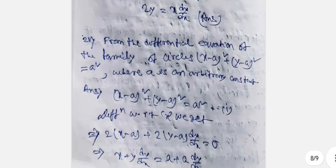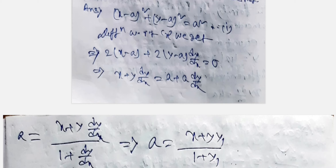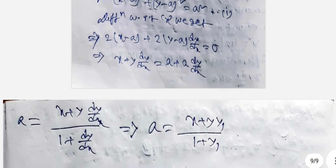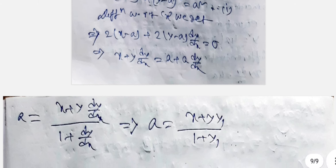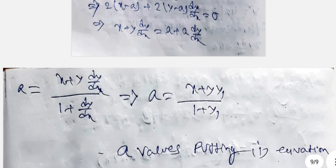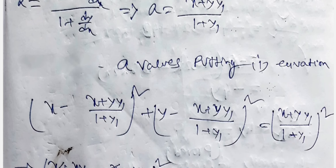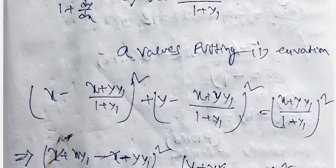Next question: Form the differential equation of the family of circles (x - a)² + (y - a)² = a², where A is an arbitrary constant. Differentiating with respect to x: 2(x - a) + 2(y - a)·dy/dx = 0. From this: x + y·dy/dx = a(1 + dy/dx), so a = (x + y·y1)/(1 + y1). Substituting back into the original equation gives the required differential equation.